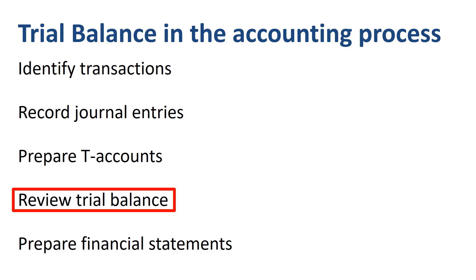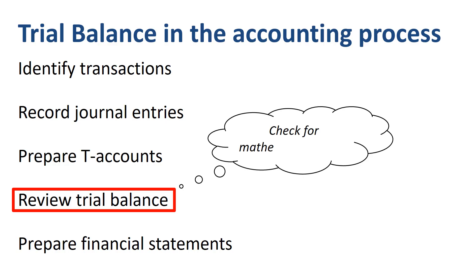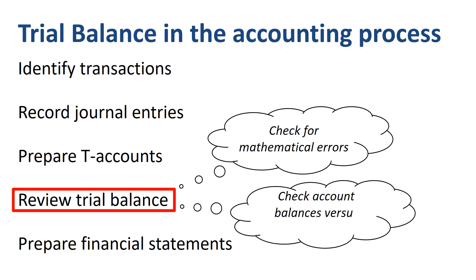A trial balance allows you to check for mathematical errors — is the sum of the debits equal to the sum of the credits — and check account balances versus expectations. If you usually have a balance of around $100,000 in accounts receivable, and now you have $10 million, you want to check the journal entries making up that balance.